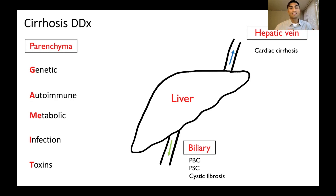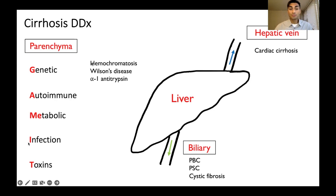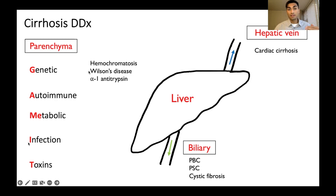For those two reasons, you should remember the parenchymal causes of cirrhosis with the GAMUT mnemonic. Let's get into them. First, G is for genetic. The specific ones we're focusing on are hemochromatosis — when you have too-high iron levels in the body due to a genetic mutation — and Wilson's disease, a genetic abnormality that increases copper levels.